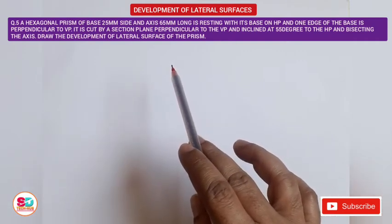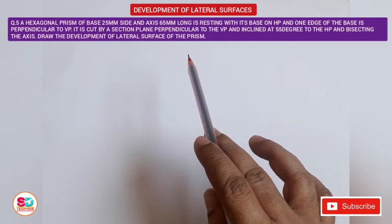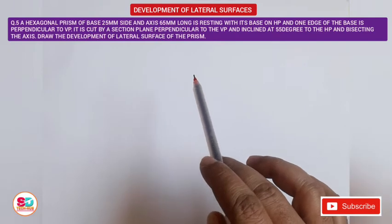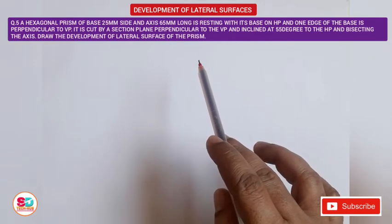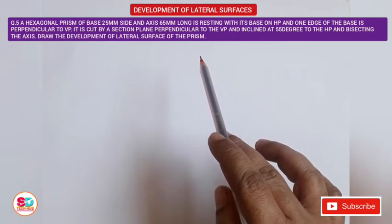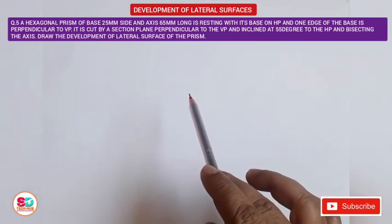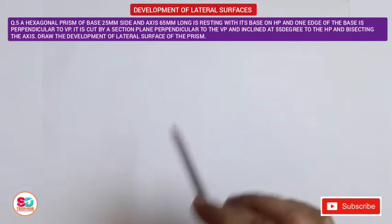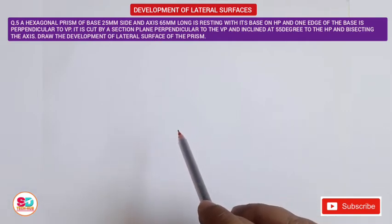A hexagonal prism with a base edge of 25 mm is given, whose axis is 65 mm long. It is resting on HP and one of its edges is perpendicular to the VP. The cutting plane is perpendicular to the VP, inclined at 55 degrees to the HP, and bisects the axis. We have to draw the development of the lateral surface after cutting — this is a truncated solid.